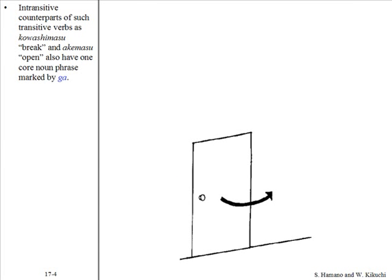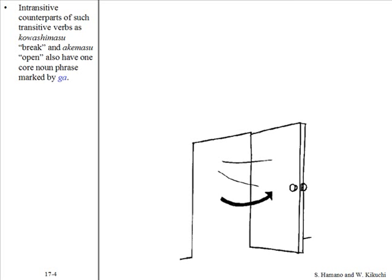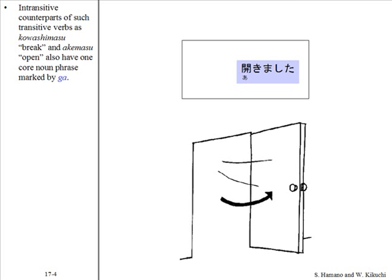Intransitive counterparts of such transitive verbs as kowashimasu, meaning 'break,' and akemasu, meaning 'open,' also have one core noun phrase marked by ga. For example: Doa ga akimashita.